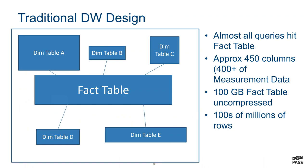The customer's data warehouse was a traditional star design. We had our fact table, which was pretty wide at 450 columns — about 400-plus of those consisted of measurement data. We had a large dimension table A with a lot of data in it, and some other smaller tables around it. This fact table, when we first loaded the first year of data in, had about 100 GB of data uncompressed, with hundreds of millions of rows in this particular setup.